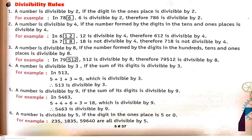Now, point 6 — a number is divisible by 5. What do you need to see? The ones place digit will be 5 or 0. It is very simple. For example: 235, 1835, 259, 614. Among these, the numbers whose ones place is 0 or 5 are divisible by 5.